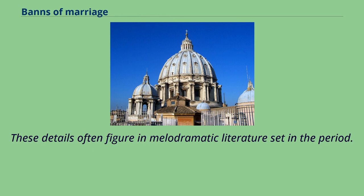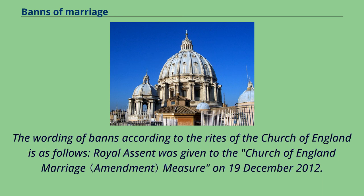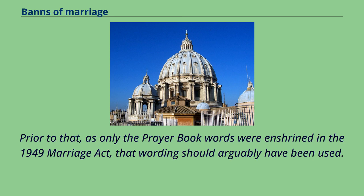These details often figure in melodramatic literature set in the period. In 1656, the parish register of St. Mary-le-Crypt in Gloucester records banns of marriage as being published by the bellman, a town crier. The wording of banns according to the rites of the Church of England is as follows: royal assent was given to the Church of England Marriage Measure on December 19, 2012. Prior to that, as only the prayer book words were enshrined in the 1949 Marriage Act, that wording should arguably have been used.